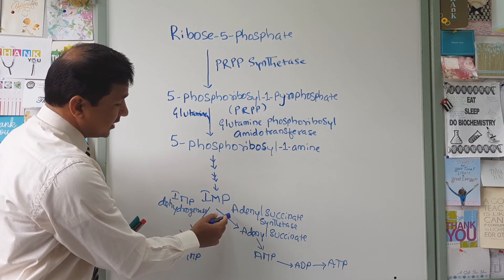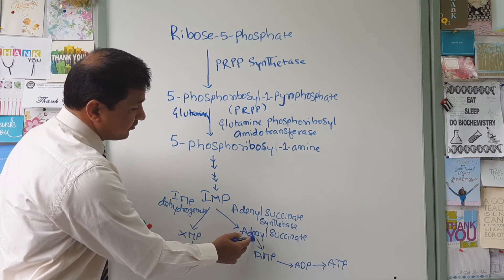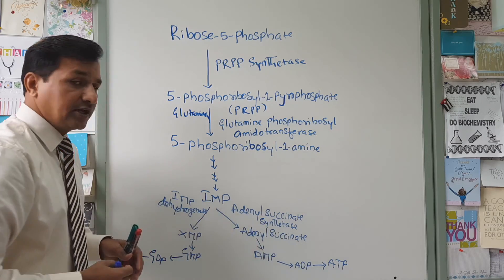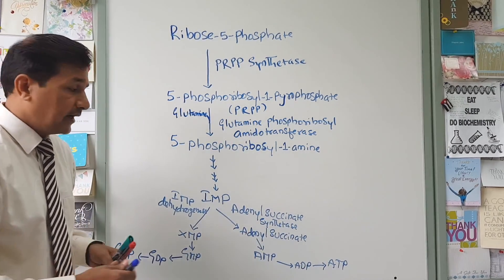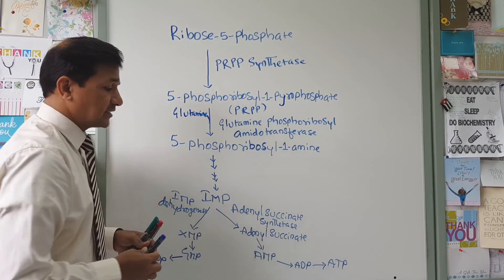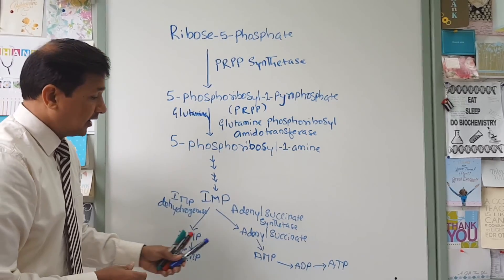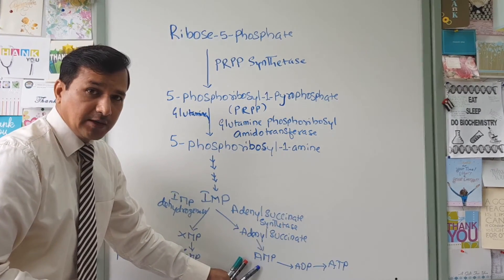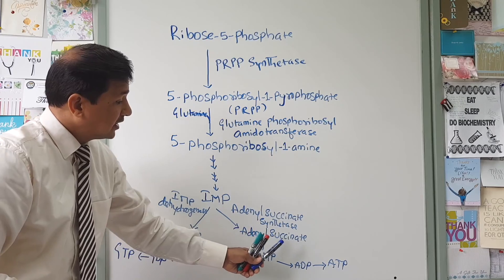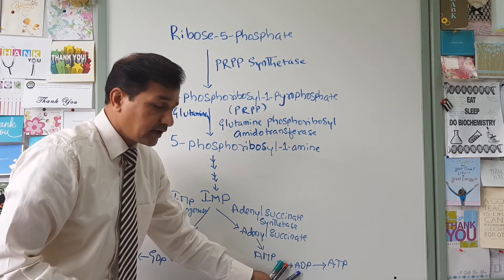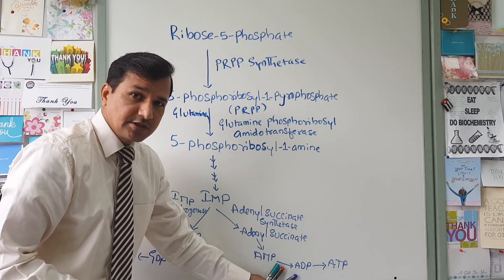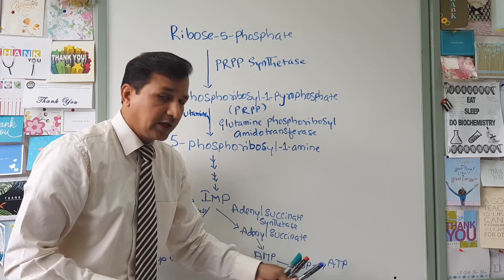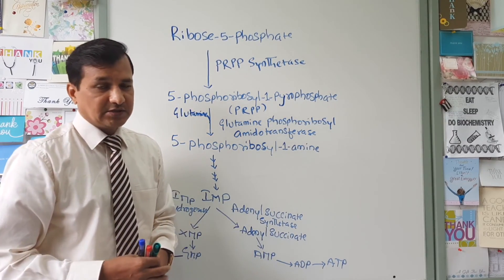Inosine monophosphate can also be converted into adenylosuccinate by an enzyme called adenylosuccinate synthetase. Adenylosuccinate can further be converted into AMP (adenosine monophosphate), then into ADP (adenosine diphosphate), and then into ATP (adenosine triphosphate).